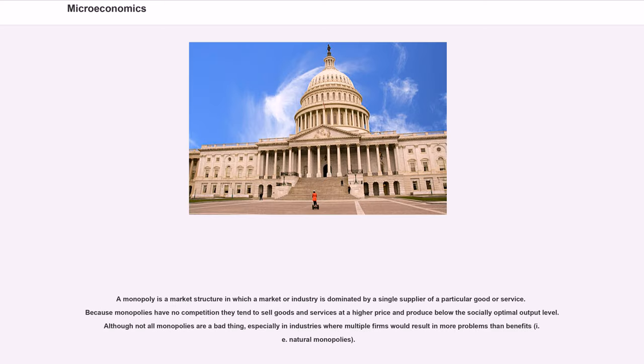A monopoly is a market structure in which a market or industry is dominated by a single supplier of a particular good or service. Because monopolies have no competition they tend to sell goods and services at a higher price and produce below the socially optimal output level. Although not all monopolies are a bad thing, especially in industries where multiple firms would result in more problems than benefits, i.e. natural monopolies.